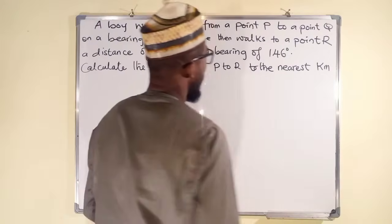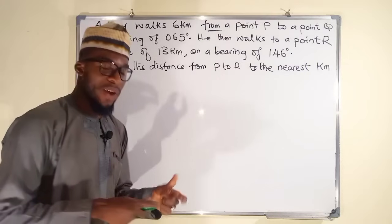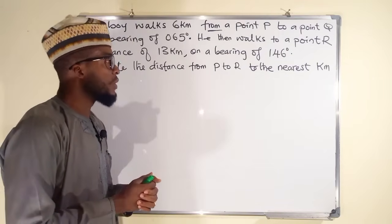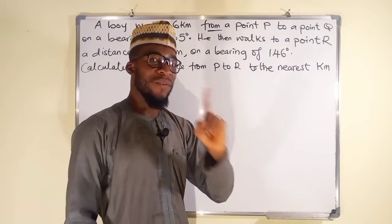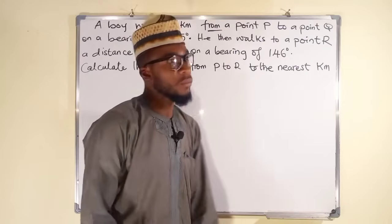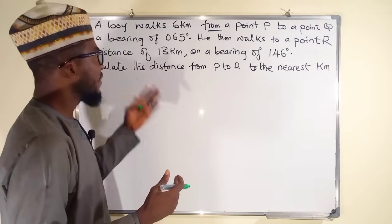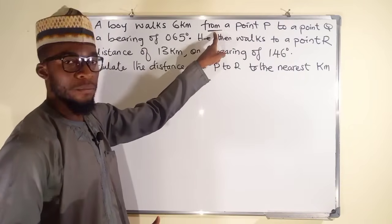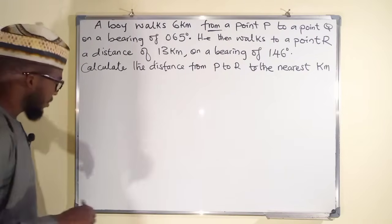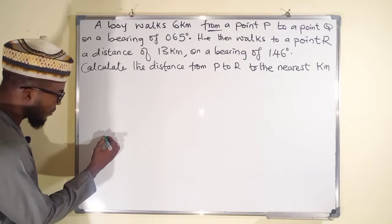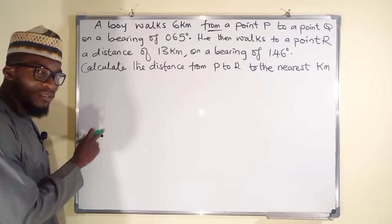Remember, the word 'from' is very important in bearing — it specifies where we are going to construct the angle. When solving problems on true bearing, I will always advise you to start with the first bearing mentioned in the question. The first bearing is 65 degrees, and you can see it is formed from P, so that is the first location we need to sketch.